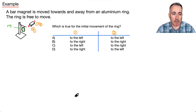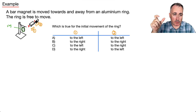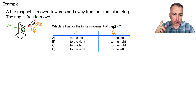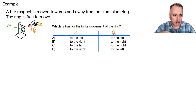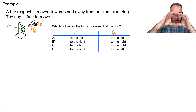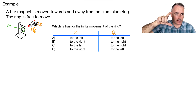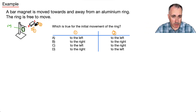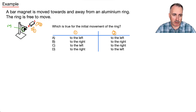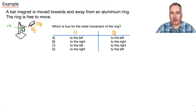For the last example, we have a bar magnet — I've tried to draw it in 3D with a north-south. It's going to be moving either towards this aluminum ring or away from it. Situation 1 is when it's coming towards it, situation 2 is when it's going away. This little ring is just a piece of metal, so current can flow in it one way or the other, and it's free to swing back and forth. The question is: what happens initially when you move this magnet towards the ring — does the ring move left or right?